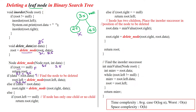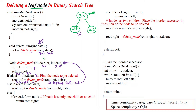So we take root dot left — 35 dot left is 25 — and we make a recursive call. Now in the recursive call, the root is 25 and the data searching is also 25.